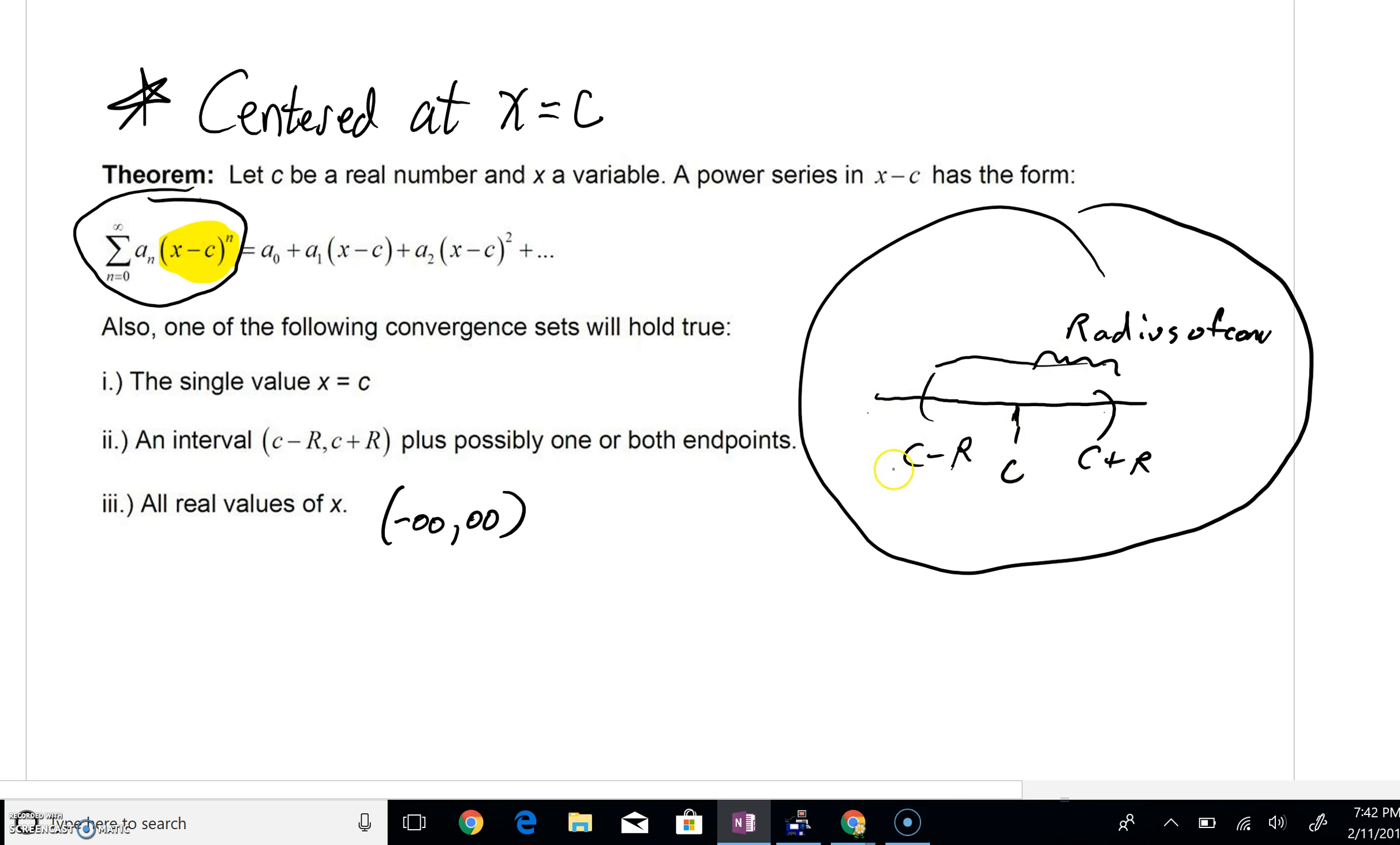r steps to the left, that would be c minus r. Our interval of convergence could be between c minus r and c plus r. That's what one possibility is for a power series.